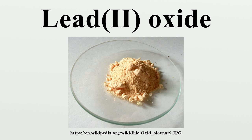When PbO occurs in a tetragonal lattice structure it is called litharge, and when PbO has an orthorhombic lattice structure it is called massicot. PbO can be changed from massicot to litharge or vice versa by controlled heating and cooling. The tetragonal form is usually red or orange in color, while the orthorhombic is usually yellow or orange, but the color is not a very reliable indicator of the structure.